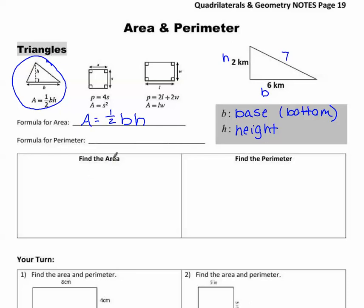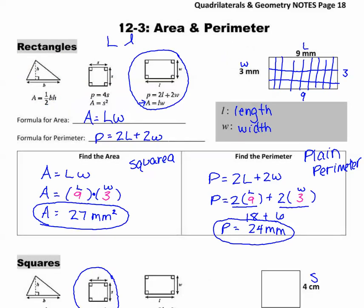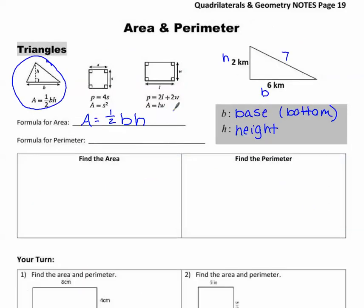There isn't a formula for the perimeter of a triangle on your formula sheet. Think back to how we found the perimeter of the rectangle — we walked around the outside of the shape. Same idea here: just add up all the sides. So we write it as P equals side 1 plus side 2 plus side 3.